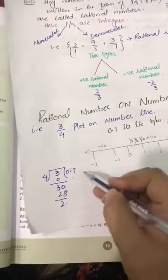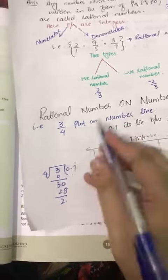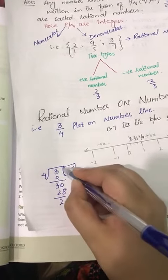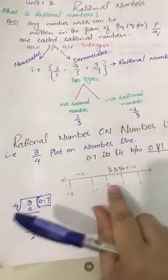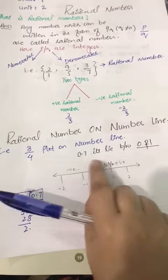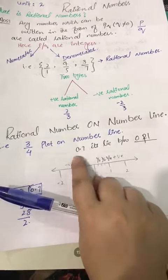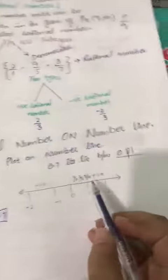0.7 - clear, our number is 0.7. It lies between 0 and 1, okay? Because 0.7 is greater than 0 and less than 1. Clear, okay?